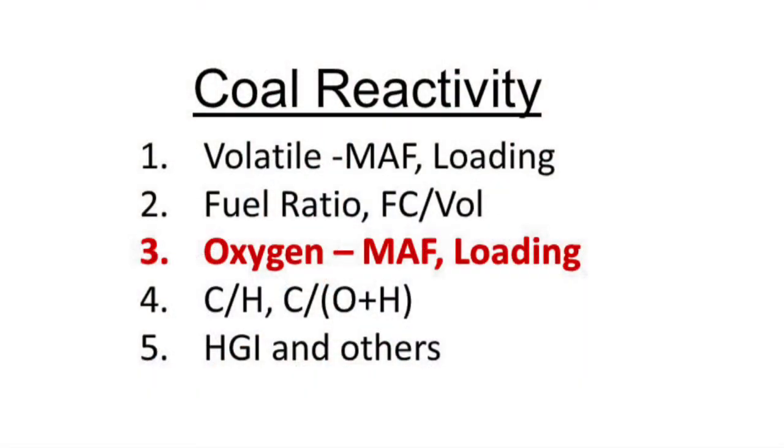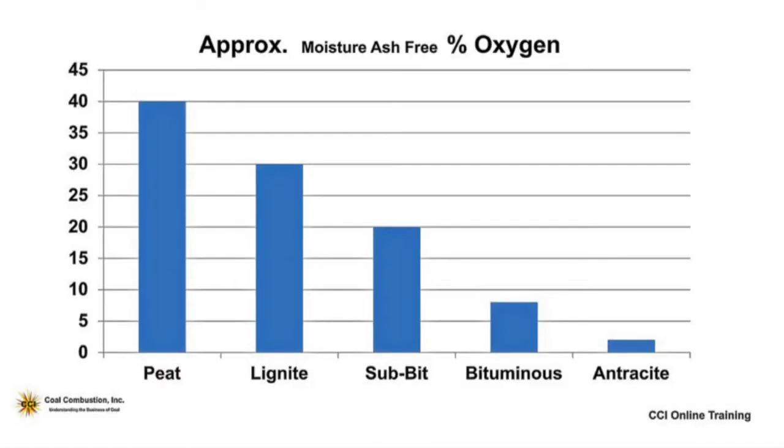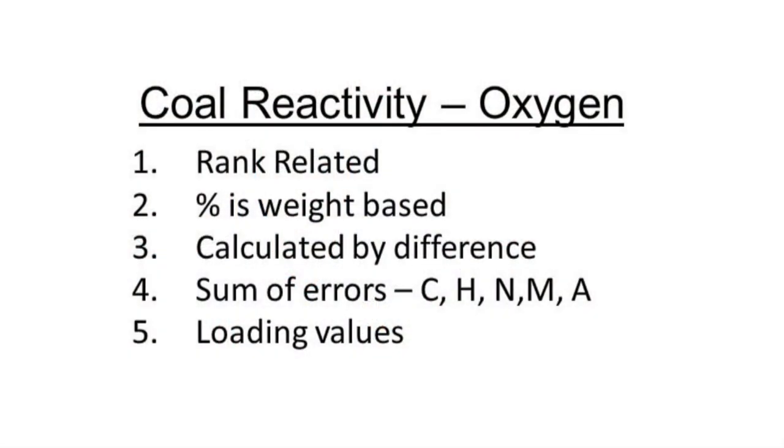Looking at the oxygen content from the ultimate analysis, we see that the original woody or plant material is very high in oxygen, then a slow decrease in oxygen from lignites to sub-bituminous. Getting down to the bituminous, they might only have about 10% oxygen. Down into the low volatile and anthracite coals, it might only be 1–2% oxygen. So we see a correlation: oxygen concentration goes down as rank goes up, and the corresponding carbon value goes up. If I look at the oxygen concentration in a coal and it's high, I'm going to think that's a more reactive coal.